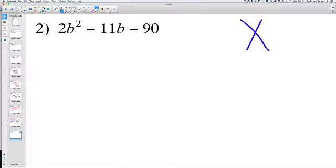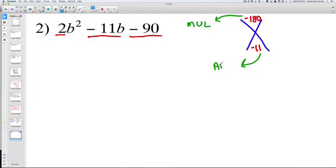Remember that on your X you're going to take these two numbers here, the 2 and the negative 90, so it's going to be negative 180. Then we're going to take the other number, the 11, and put it on the bottom: negative 11. So we need a number that multiplies to be 180 and adds to be negative 11.